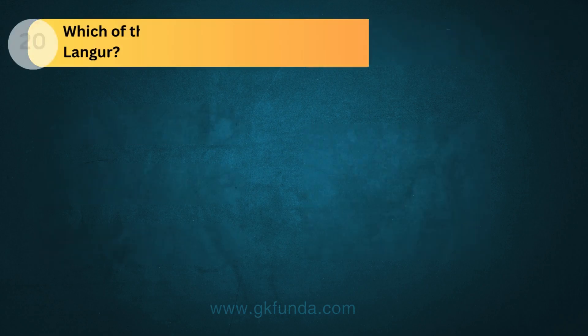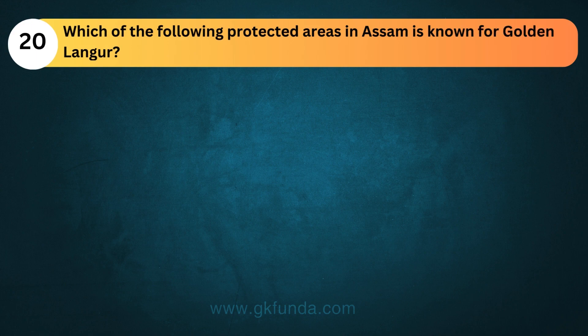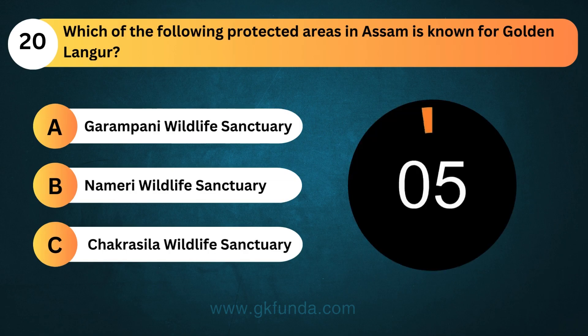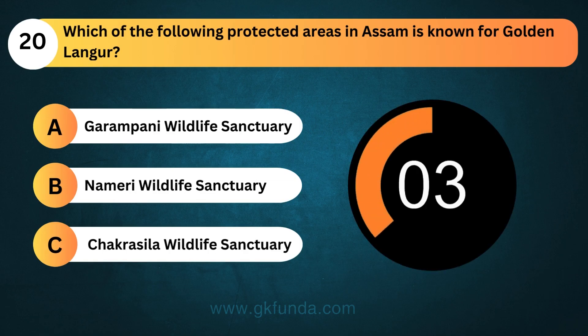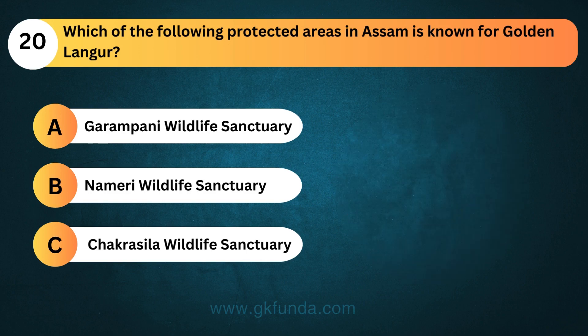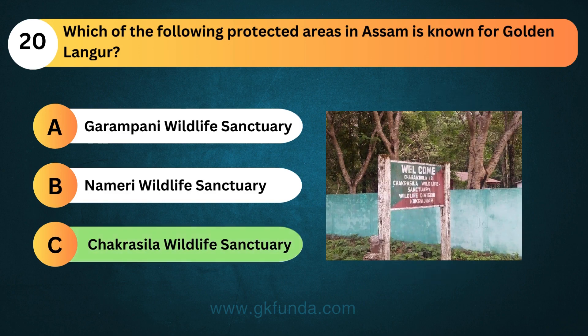Which of the following protected areas in Assam is known for Golden Langur? The answer is option C, Chokrasila Wildlife Sanctuary.